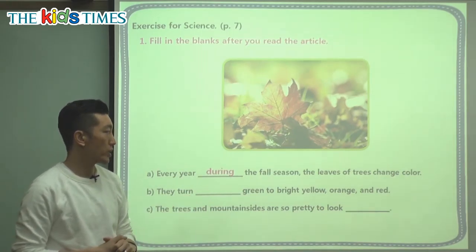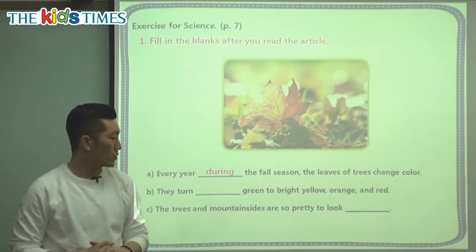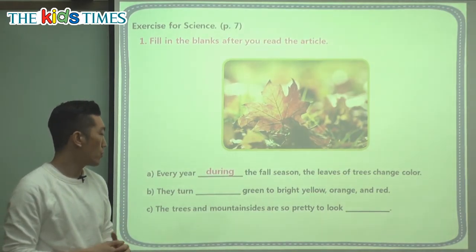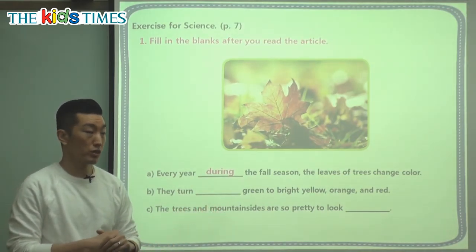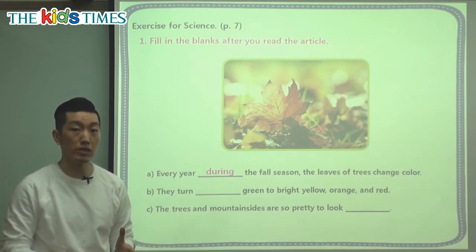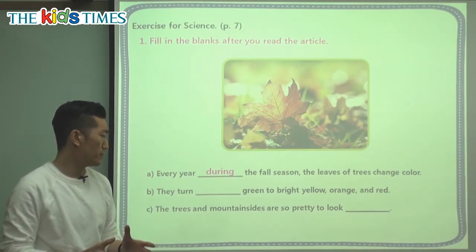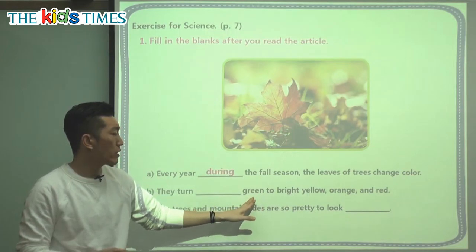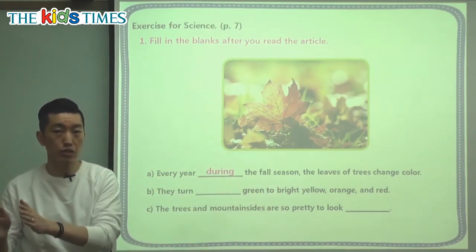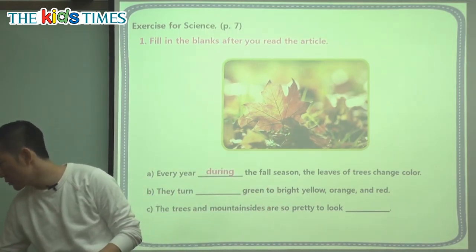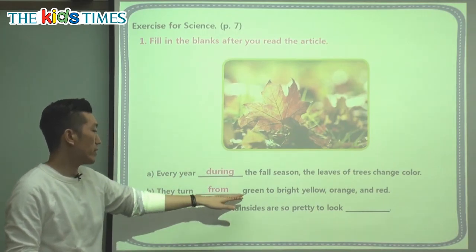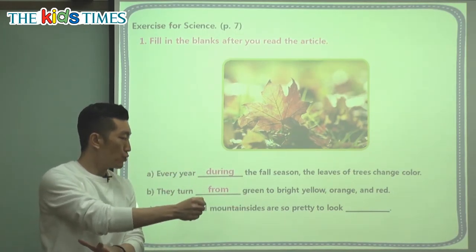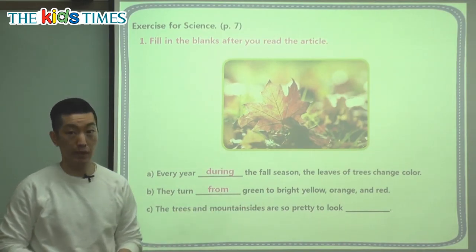They turn [blank] green to bright yellow, orange, and red. We said they were originally green, going from one color to another — this to that. That's when we use the word 'from.' So they are green in the summer and then go from green to bright yellow, orange, and red.